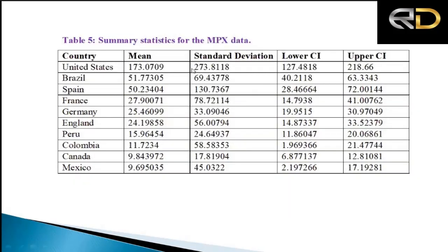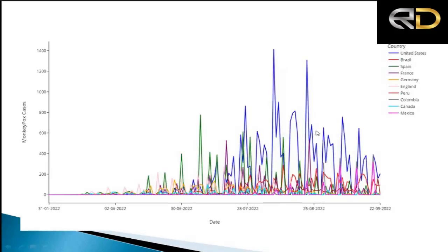Here is the summary statistics for monkeypox virus across the top 10 countries, showing average incidences and standard deviations. The graphs for different countries show that the United States has the highest peak in incidences, followed by Spain and other countries.